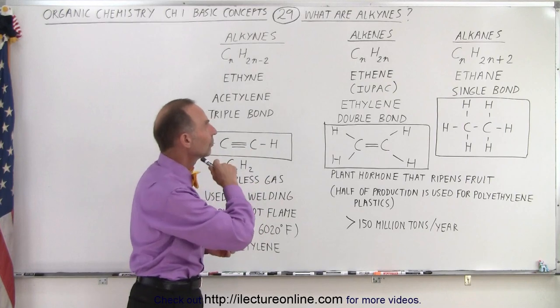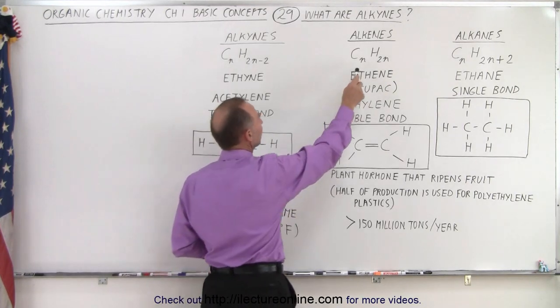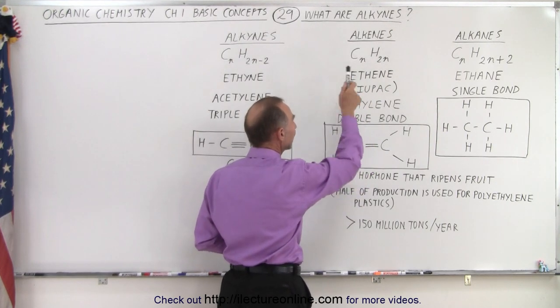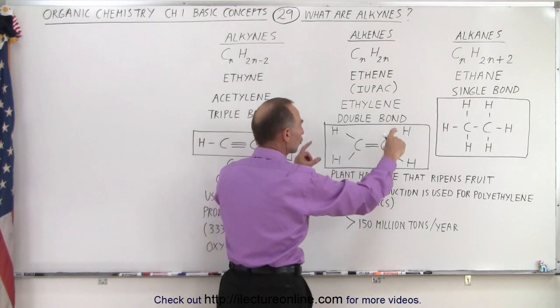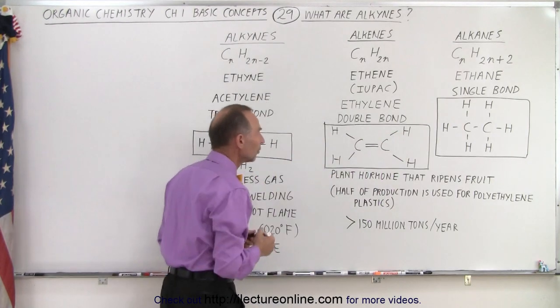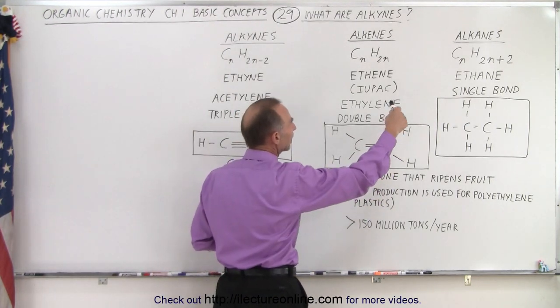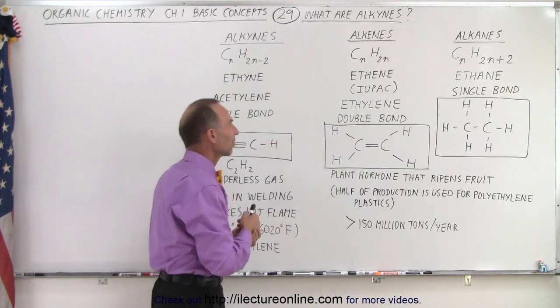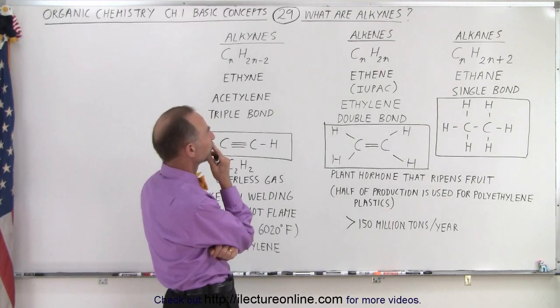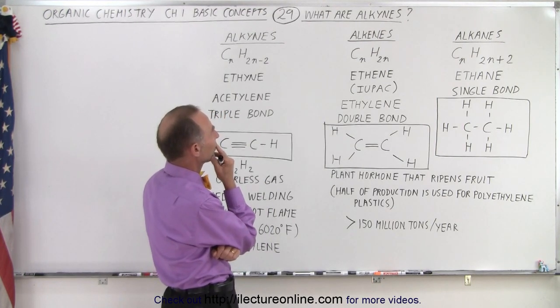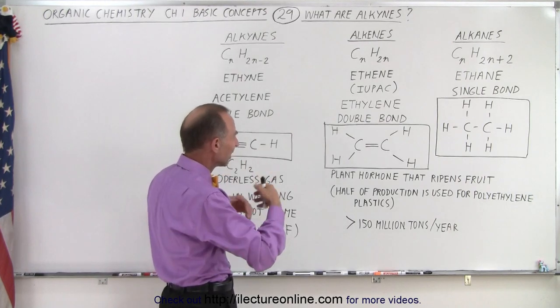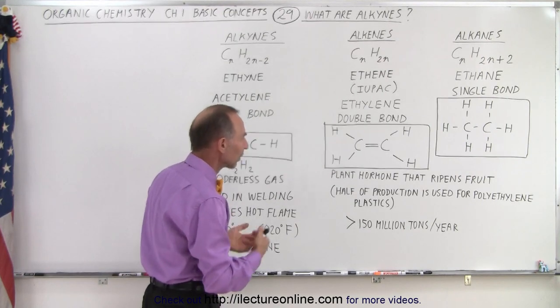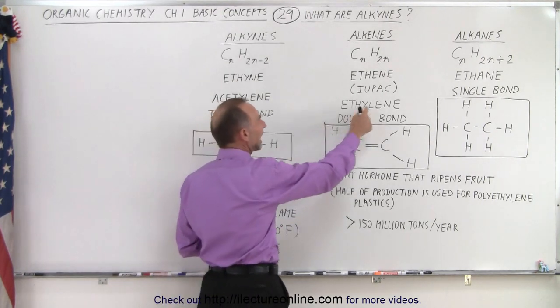Then when we go to the alkenes, there the ratio is that for every n number of carbons, you have twice as many hydrogens. The reason for that is alkenes have a double bond, and so now you can see that there's twice as many hydrogens as there are carbons. This is called ethene instead of ethane, and notice that is the official IUPAC name - the International Union naming convention they use for these chemicals. But the common name is ethylene.